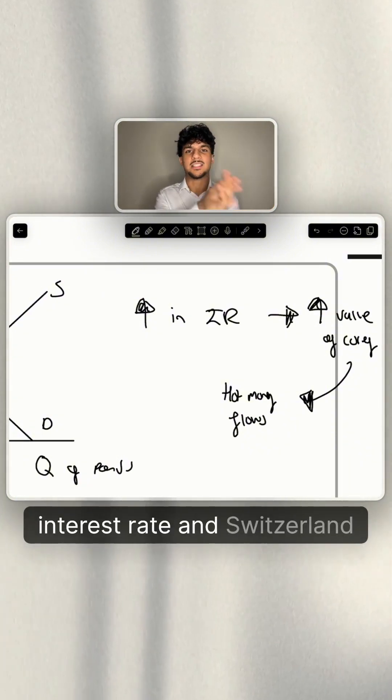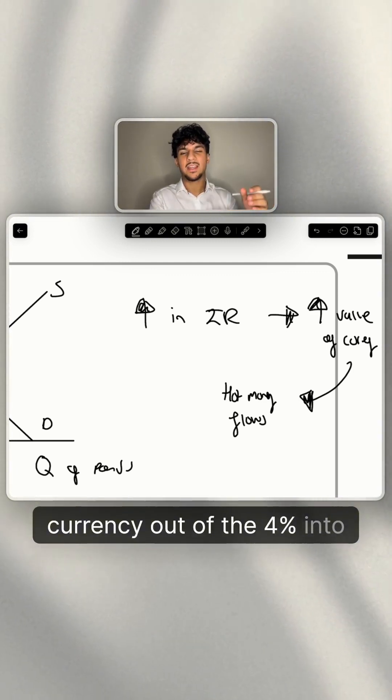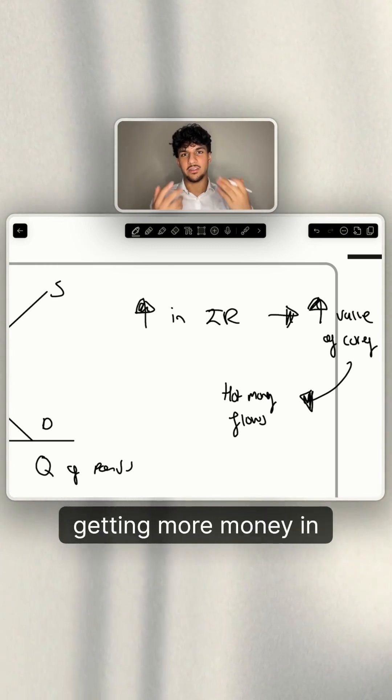Since if one country has a 4% interest rate and Switzerland has a 4.5% interest rate, investors will move their currency out of the 4% into Switzerland, which is 4.5%, since passively they're getting more money in interest.